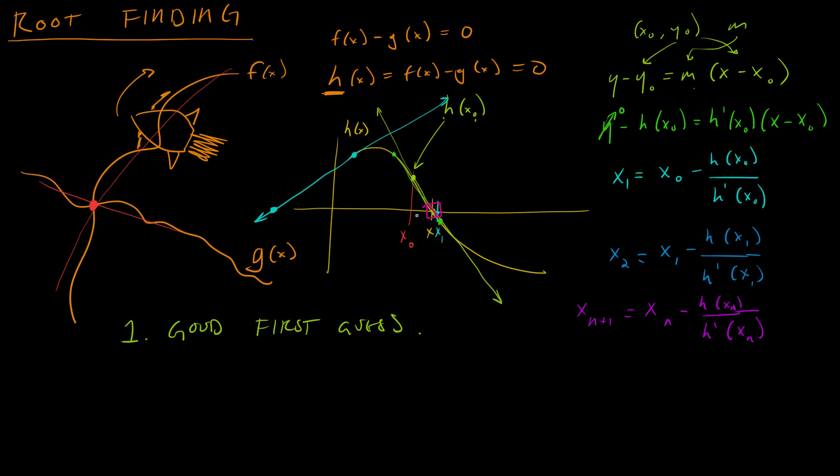So a lot of the times you can use, for example, bisection method to get a good first guess. And then you use Newton's method to improve your guess.